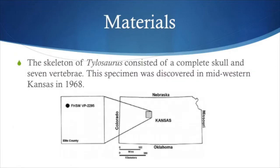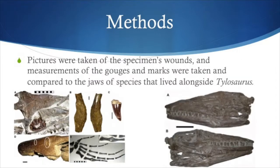The materials used in this study included the skeleton of the Tylosaurus, consisting of a skull and seven vertebrae. In 1968, this fossil was discovered in Kansas, specifically in Midwestern Kansas. The methods used in this study involved pictures taken of the specimen's wounds, and measurements of the gouges were taken, then compared and contrasted to the jaws of other species who lived alongside the Tylosaurus.